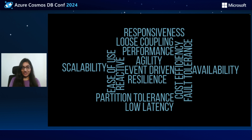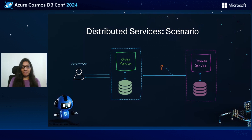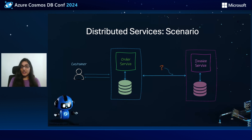Let's understand this with a scenario. Let's imagine we are building an e-commerce site. We have a customer who places an order, and for that customer, we need to generate an invoice. There are other components as well, like delivery, payment, notification. But for now, let's only talk about how these two components can be connected.